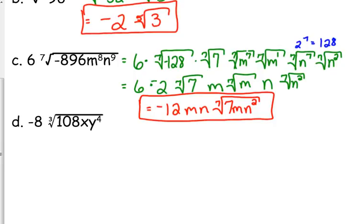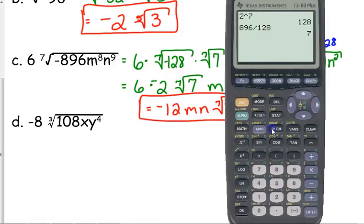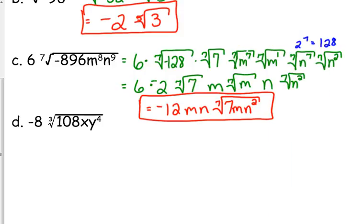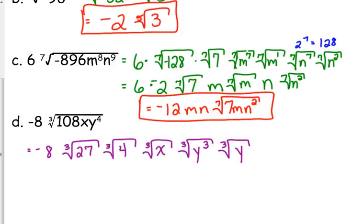Negative 8 times the cube root of 108 x y to the fourth. 108 is not a perfect cube, I'm thinking 27. Yes. So we've got negative 8, cube root of 27, the cube root of 4. We can't do anything with that x there. But the y we can split up into y cubed and y to the first.